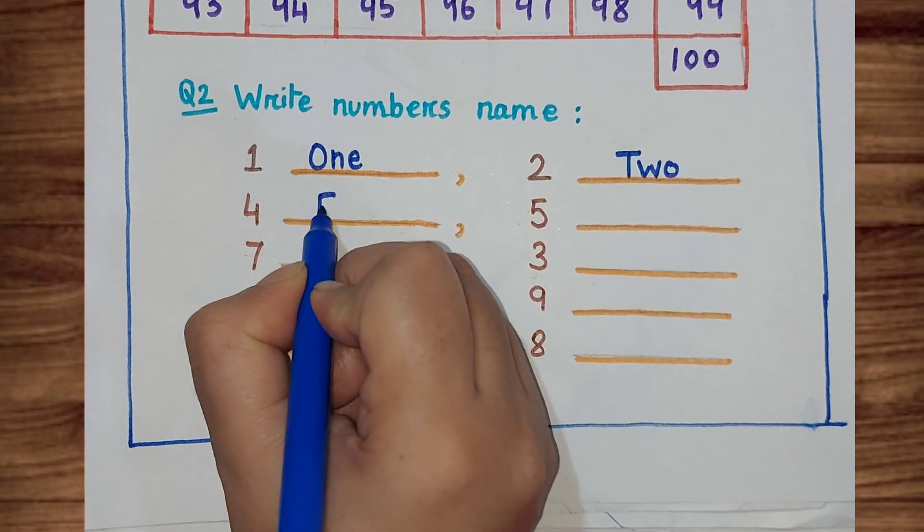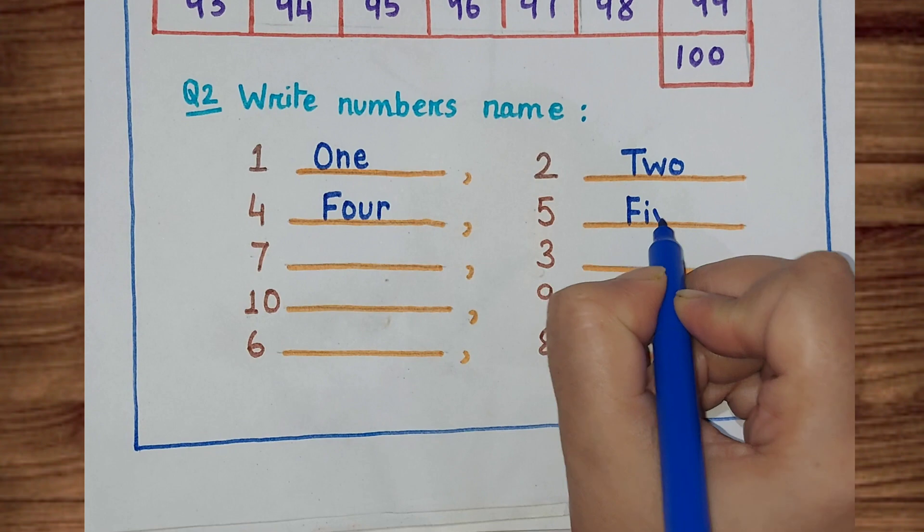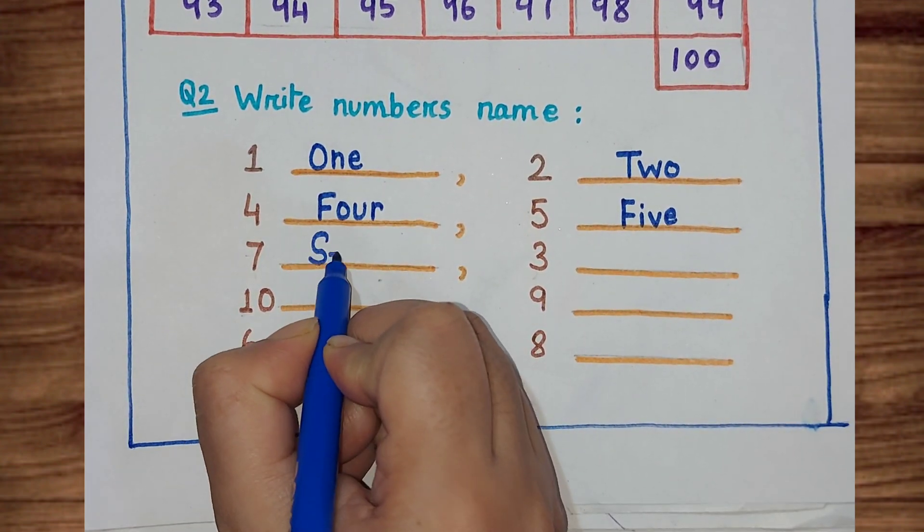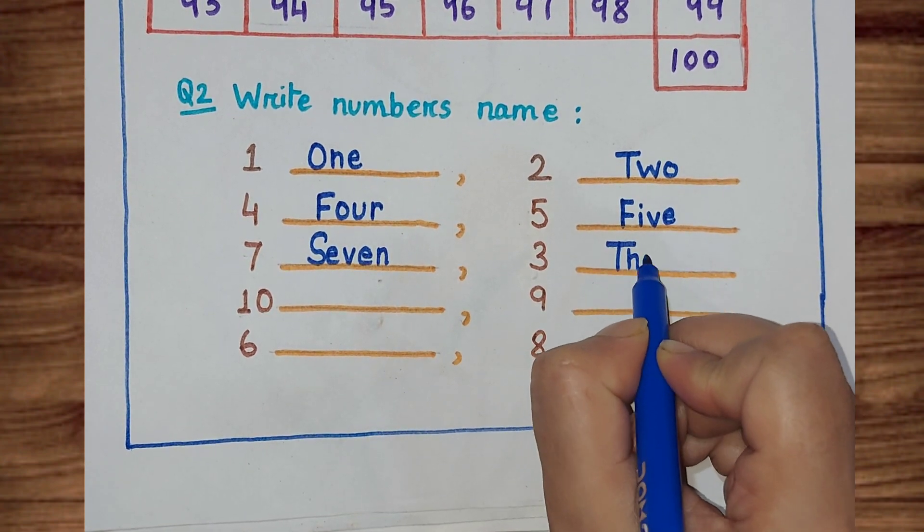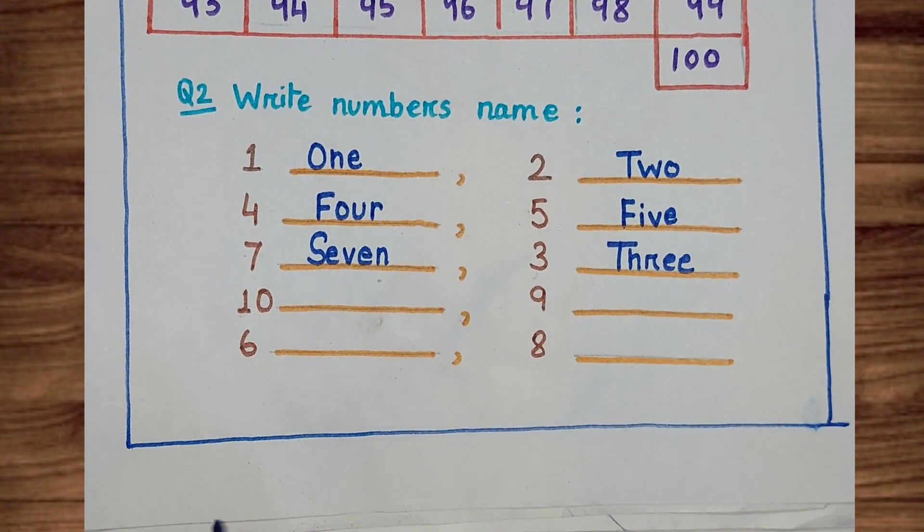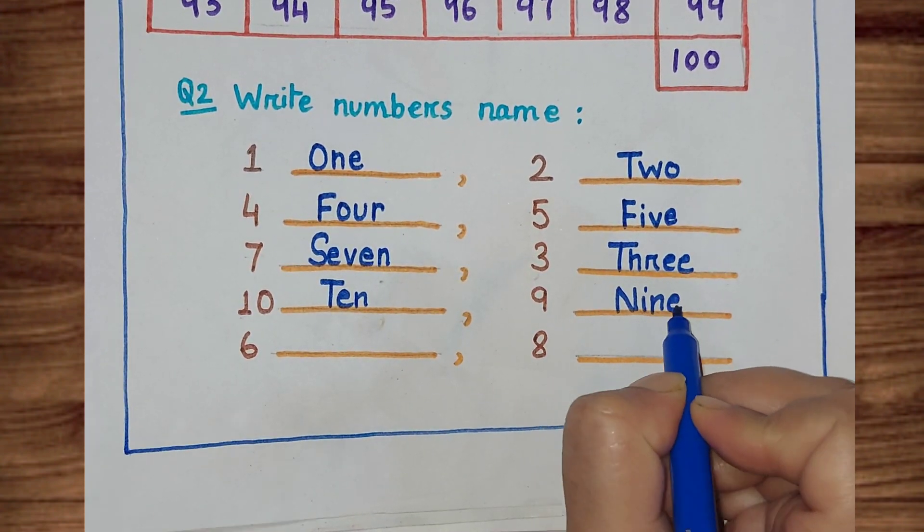Four: F-O-U-R. Five: F-I-V-E. Seven: S-E-V-E-N. Three: T-H-R-E-E. Ten: T-E-N. Nine: N-I-N-E.